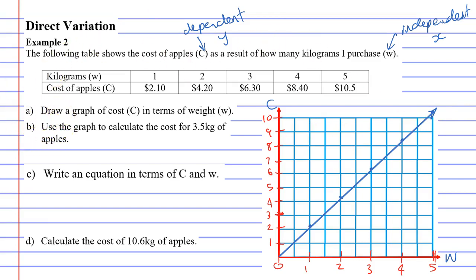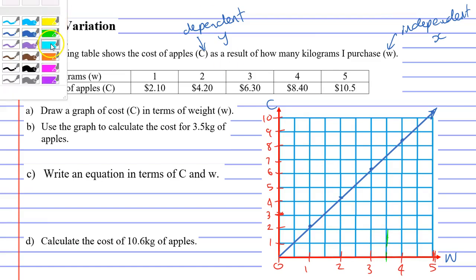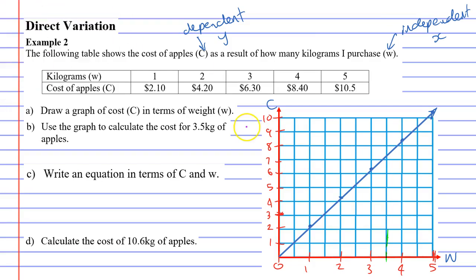Question B says, use the graph to calculate the cost for 3.5 kilograms of apples. I'm thinking I might use this highlighter option. If I change the thickness, it might make it a bit better. So, 3.5 kilograms of apples. What you do is you find 3.5 kilograms, which is here. Maybe if I change the color of my highlighter, we'll go with a purple color.